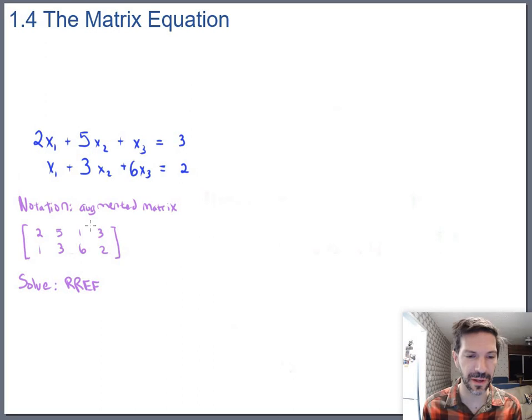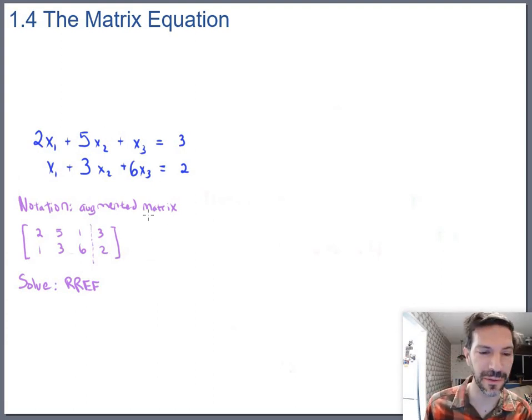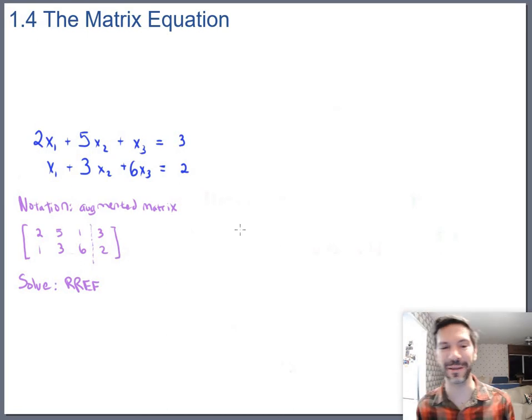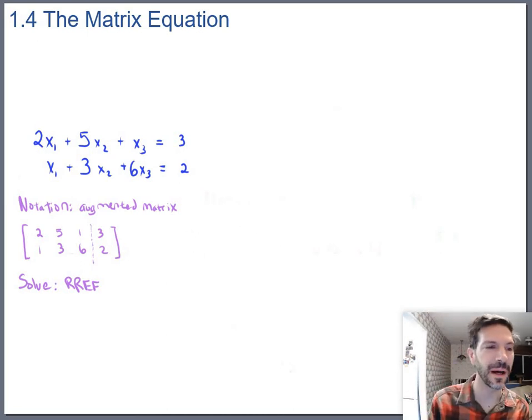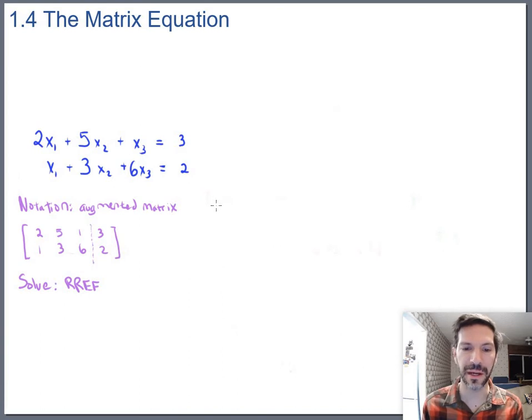Sometimes for the augmented matrix, just to indicate that it is augmented, you put this little dotted line in there where the equal signs would go, and sometimes you don't. Sometimes it's clear from context that you have an augmented matrix.